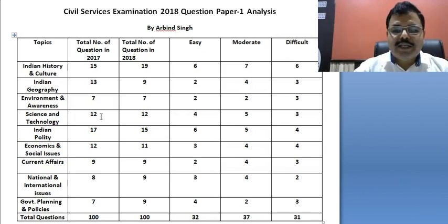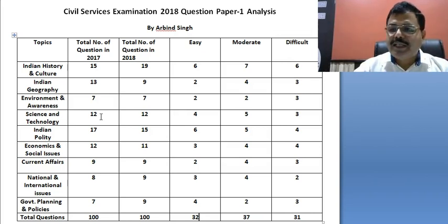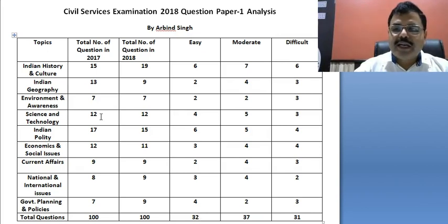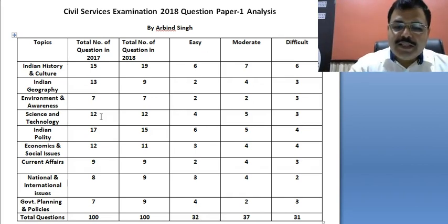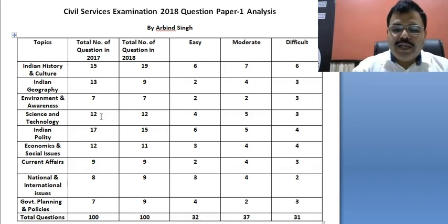So the total number of easy questions this year is 32, moderate questions 37, and difficult questions 31. Compared to last year, 36 easy questions were asked. Hopefully the cutoff will be more or less the same in this paper — though I am saying this only as a hope, as a detailed analysis is needed.